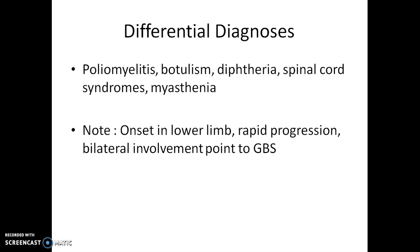The differential diagnoses for GBS include poliomyelitis, botulism, diphtheria, spinal cord lesions, and myasthenia gravis. Understanding these differentials helps clarify what makes GBS unique and distinguishable from these other conditions.